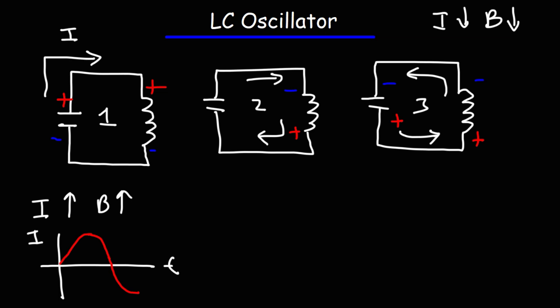Now, once the current reaches its maximum, all of the energy that has been stored in the capacitor has now been transferred back to the inductor. So now this is going to be step four. Because as step four begins, the current is going to decrease back to zero.